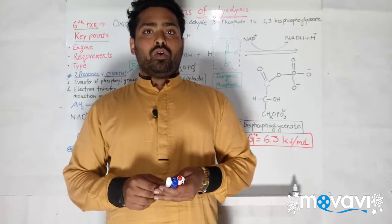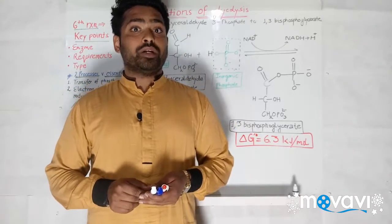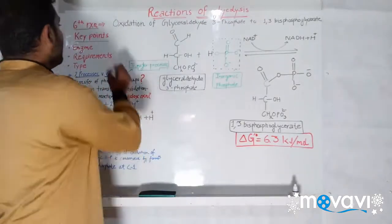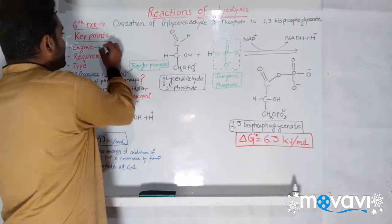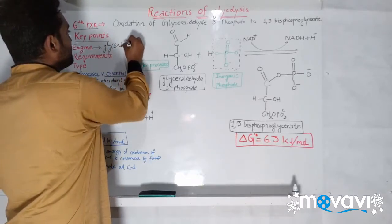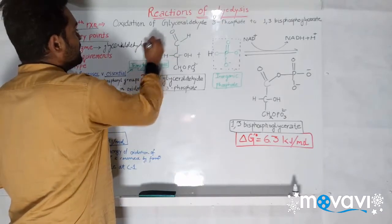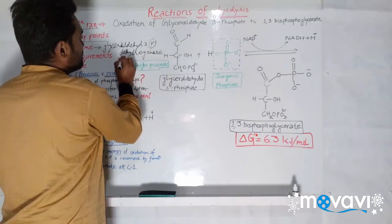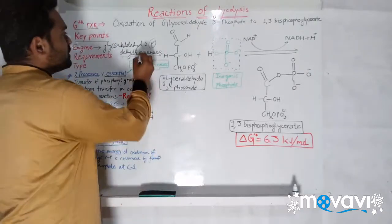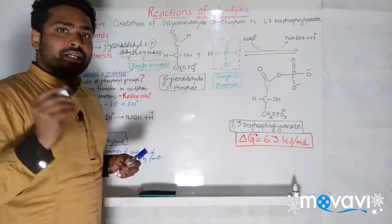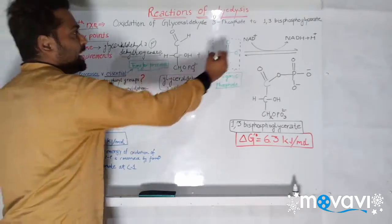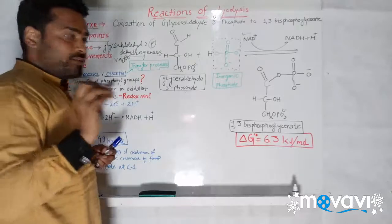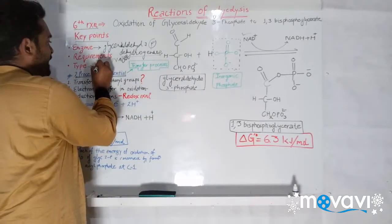The sixth reaction is the oxidation of glyceraldehyde 3-phosphate, which is converted into 1,3-bisphosphoglycerate. The enzyme is glyceraldehyde 3-phosphate dehydrogenase — a very important enzyme. Since it is a dehydrogenase, it will dehydrogenate the substrate. The requirement is NAD⁺, which is a cofactor for this enzyme; without its presence the enzyme will not work. The type is dehydrogenation.